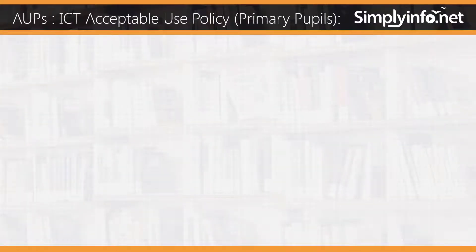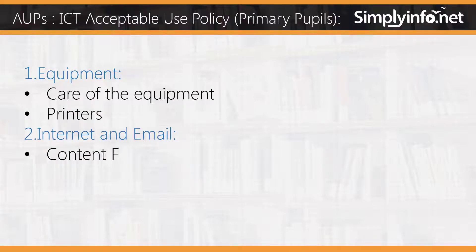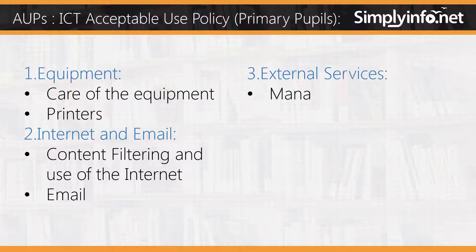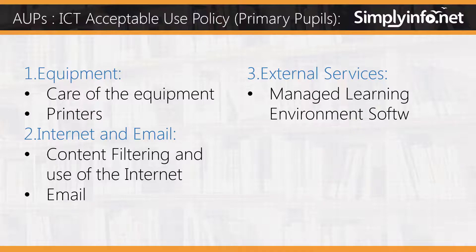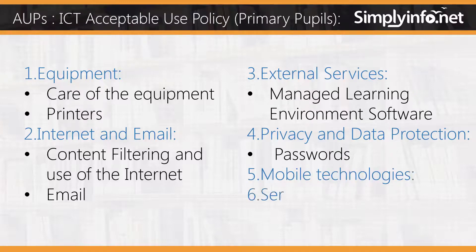ICT acceptable use policy for primary pupils covers: 1. Equipment — care of the equipment, printers; 2. Internet and email — content filtering and use of the internet, email; 3. External services — managed learning environment, software; 4. Privacy and data protection — passwords; 5. Mobile technologies; 6. Service.